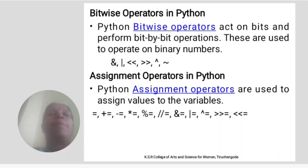Assignment operators in Python. Python assignment operators are used to assign values to variables: equal to, plus equal to, minus equal to, etc.